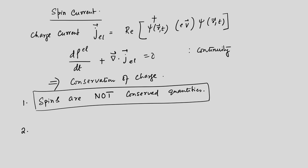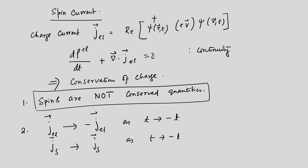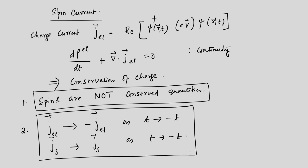There is another property that distinguishes the spin current from the charge current: the charge current changes sign under time reversal, that is J → −J as t → −t. The reason is that J = eV, and velocity changes sign under time reversal. However, J_s does not change sign as t → −t. This is very important and is related to the fact that spin currents can actually propagate without any dissipation.